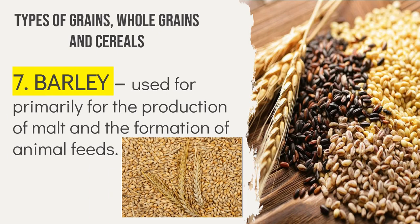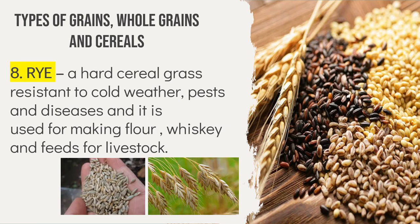Barley is used primarily for the production of malt and as animal feed. It is a hardy cereal with coarse bristles extending from the ears, widely cultivated chiefly for use in brewing and stock feed. Rye is a hard cereal grass resistant to cold weather, pests, and diseases, used for making flour, whiskey, and livestock feeds. Rye is a grass grown extensively as a grain and cover crop, closely related to barley and wheat. Rye grain is used for flour, bread, beer, crisp bread, some whiskeys, some vodkas, and animal feeds.